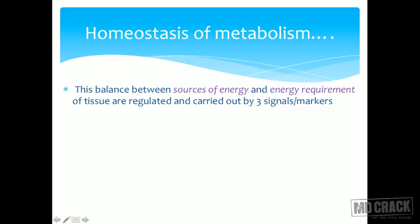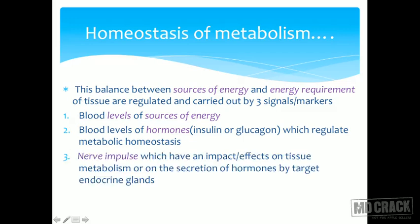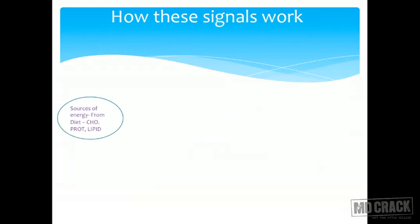This balance is regulated by three signals or markers: blood levels of sources of energy, blood levels of hormones that regulate metabolic homeostasis, and nerve impulses that have effects on tissue metabolism or on the secretion of hormones by the target endocrine glands.